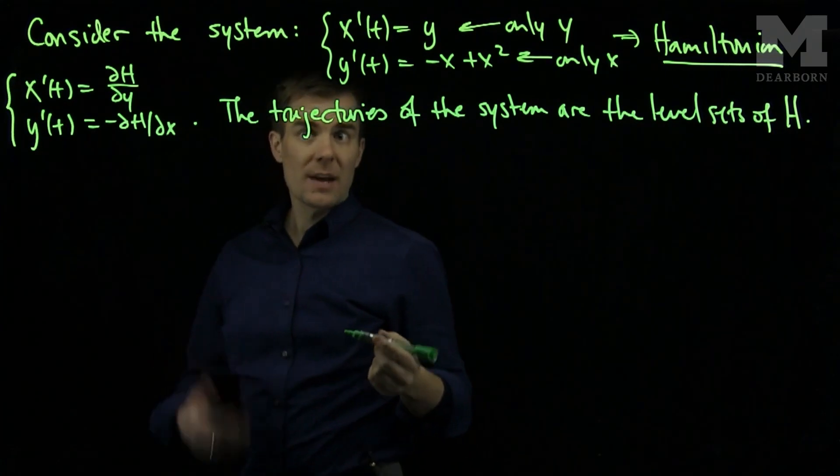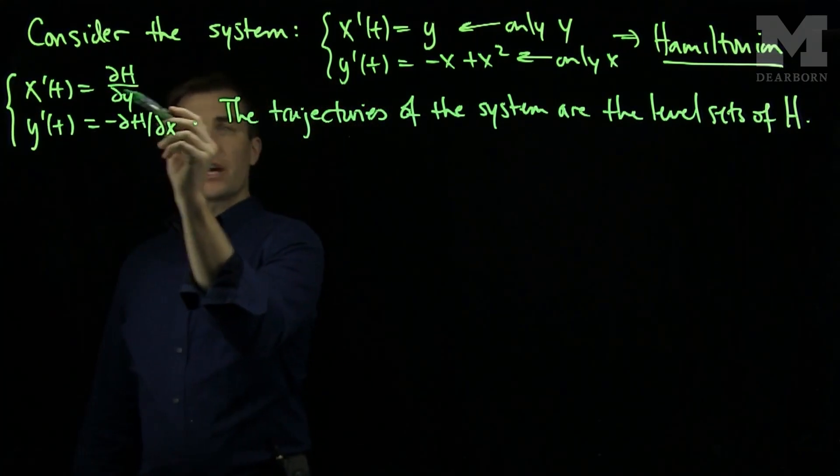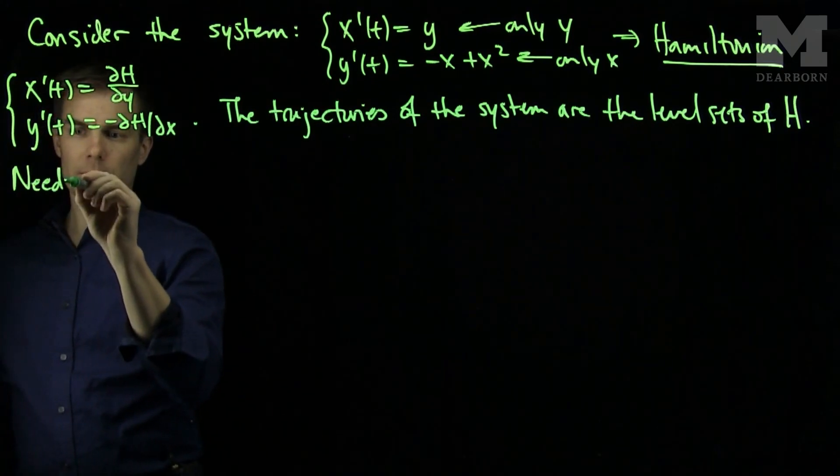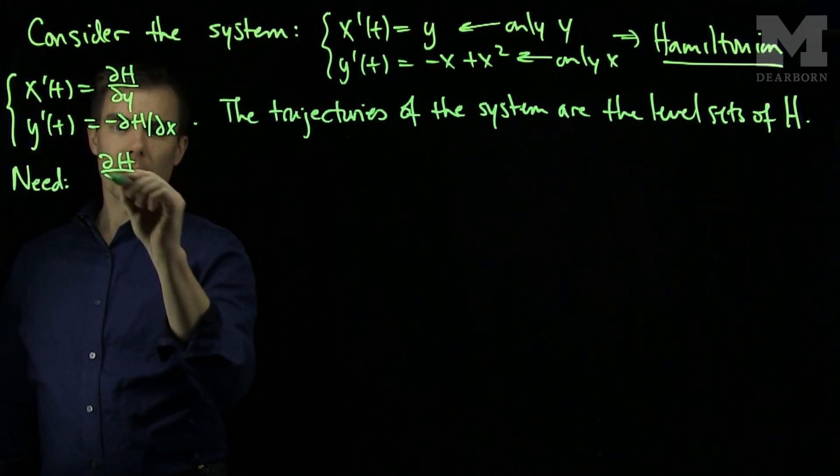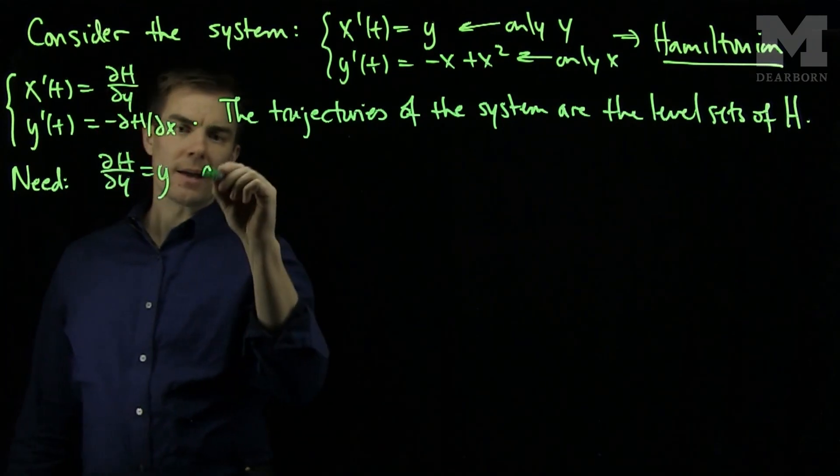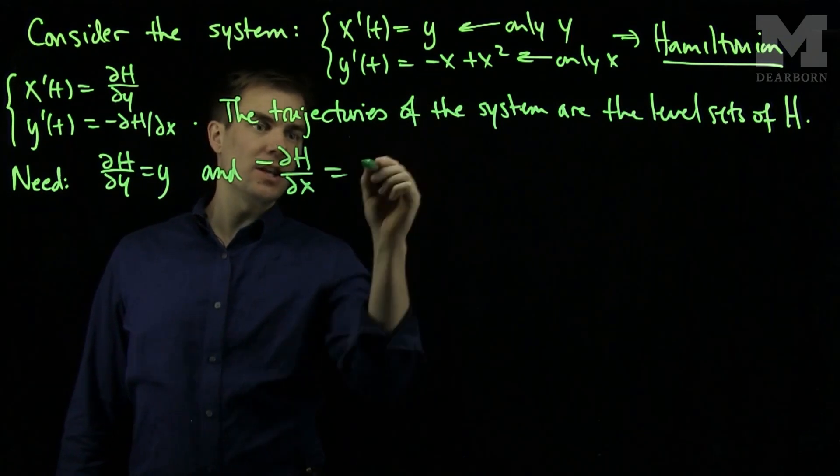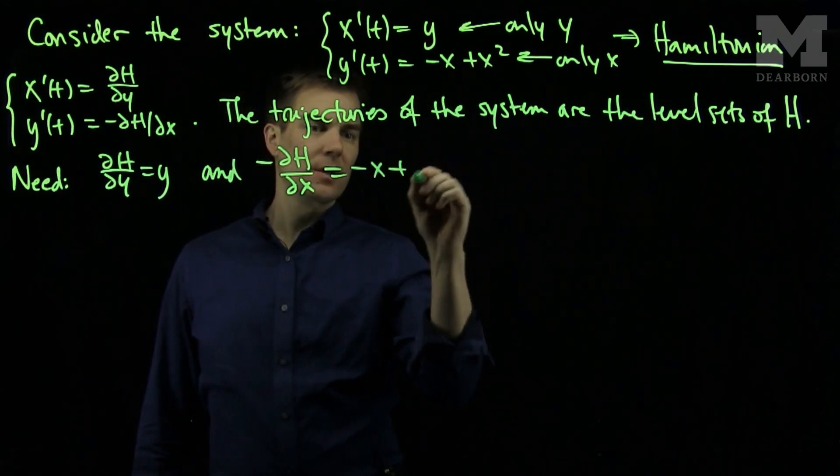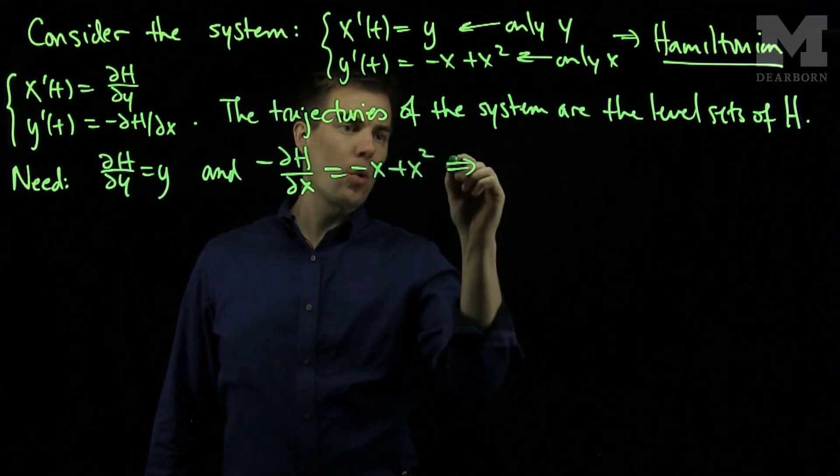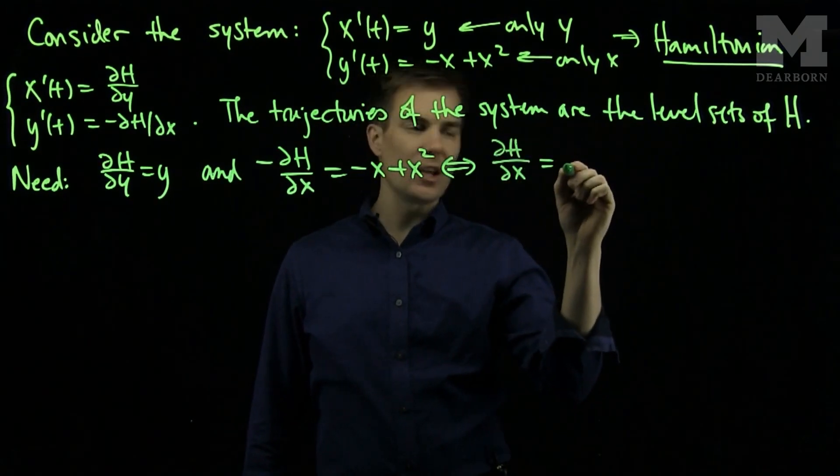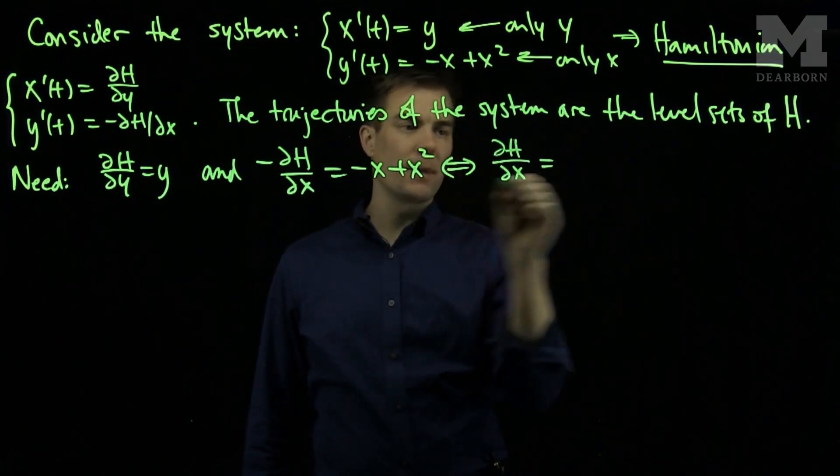Let's see how we construct the Hamiltonian function. We need to have that ∂H/∂y = y, so we need to find our Hamiltonian that ∂H/∂y = y and -∂H/∂x = -x + x², or equivalently that ∂H/∂x = x - x².